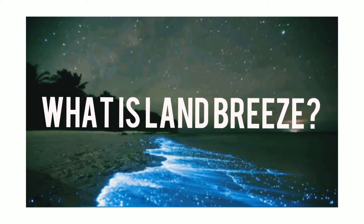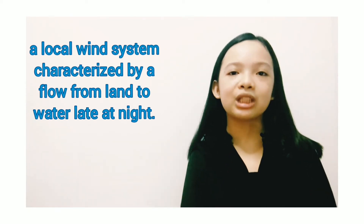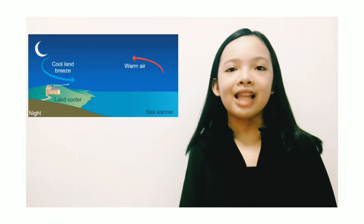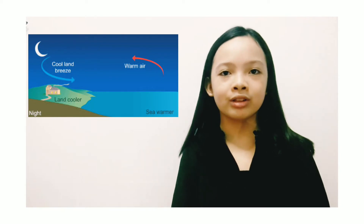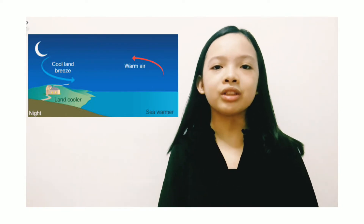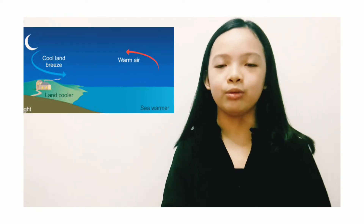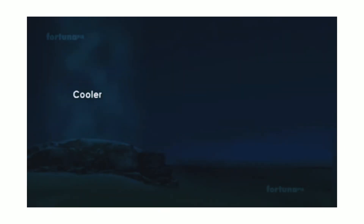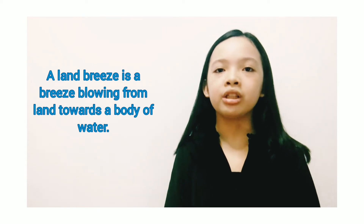What is Land Breeze? It is a local wind system characterized by a flow from land to water late at night. Land breezes alternate with sea breezes along coastlines adjacent to large bodies of water. Since the surface flow of the land breeze terminates over water, a region of low-level air convergence is produced. This causes a small temperature gradient between the ocean surface and the nearby land at night, and the wind will blow from the land to the ocean creating the land breeze. In short, a land breeze is a breeze blowing from the land towards a body of water.